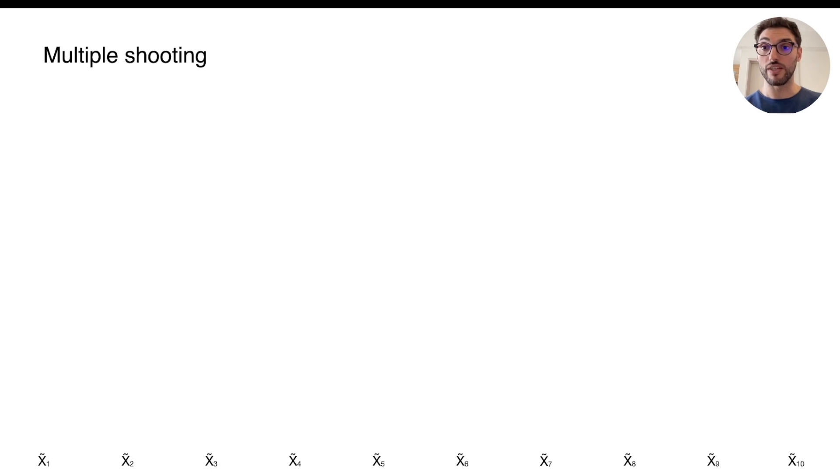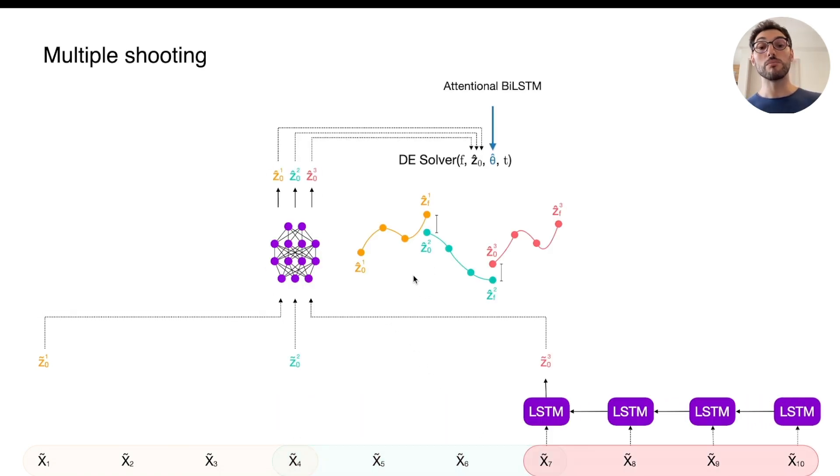Now let's see a toy example of the multiple shooting. First, you partition your time span into shorter, overlapping windows, and process each of them with the same LSTM. And then their outputs will end up being the initial conditions for each of the multiple shooting windows. Then by using the single shared set of parameters derived before from the attentional bidirectional LSTM, you solve the equations in parallel for each of the windows. And you add a continuity constraint in the loss function, quadratically penalizing for the differences between the last point of each window and the initial point of the next one.